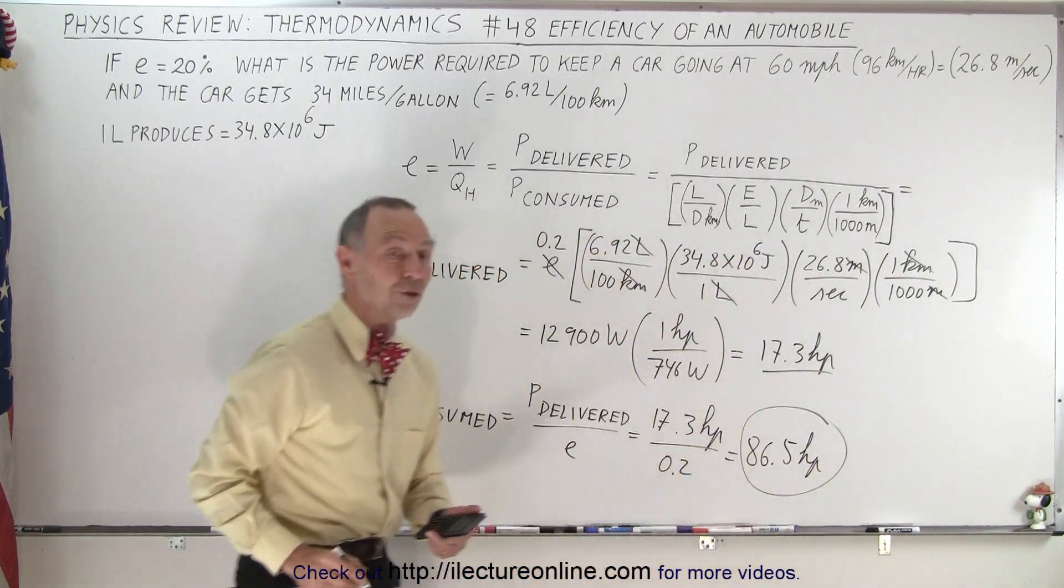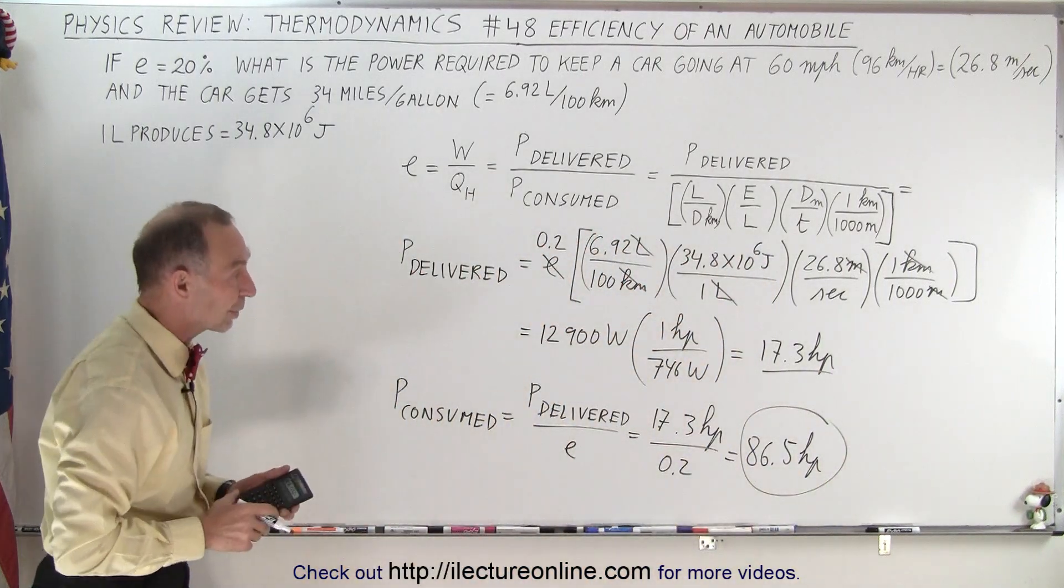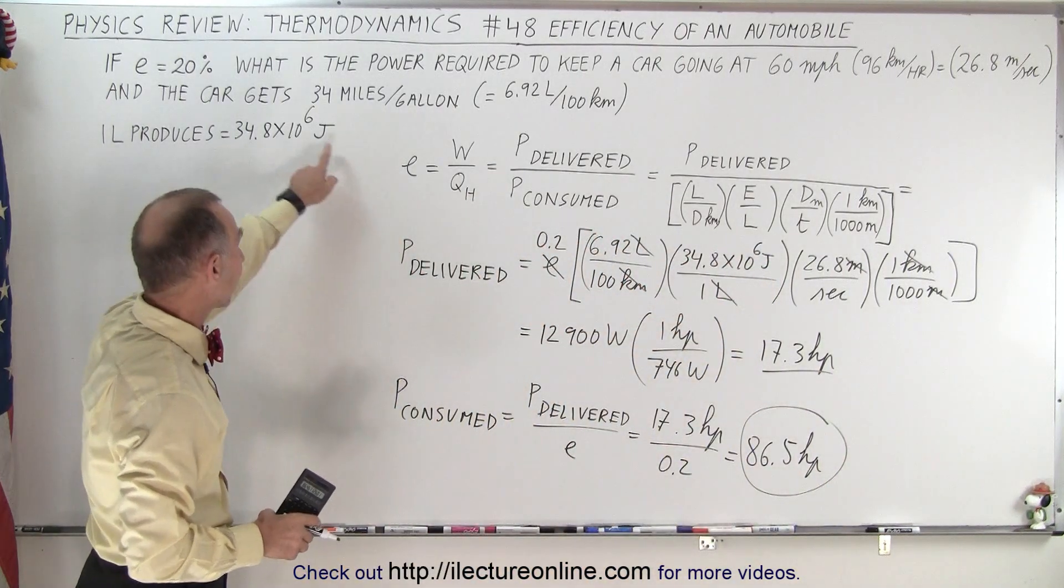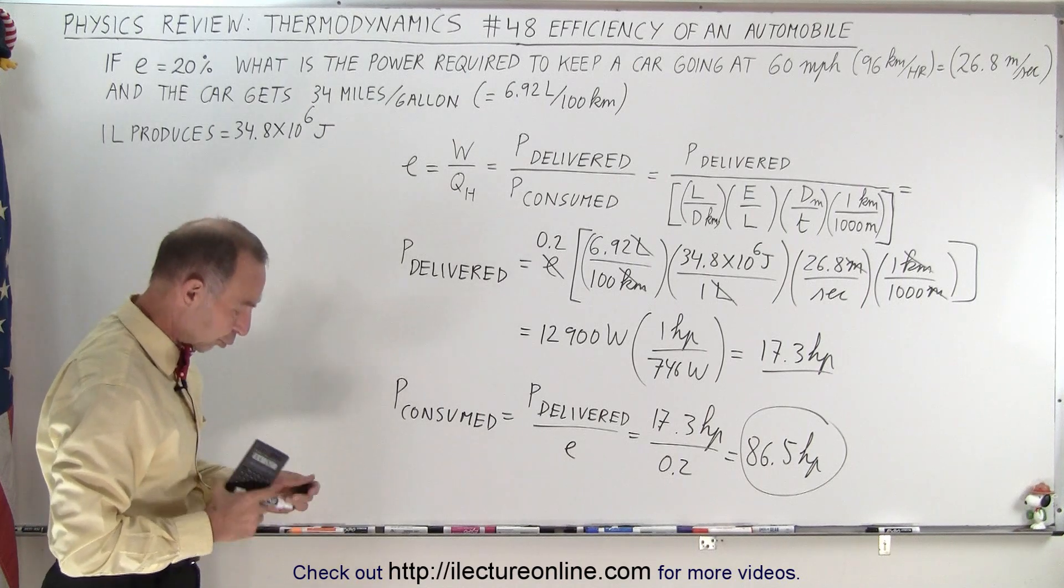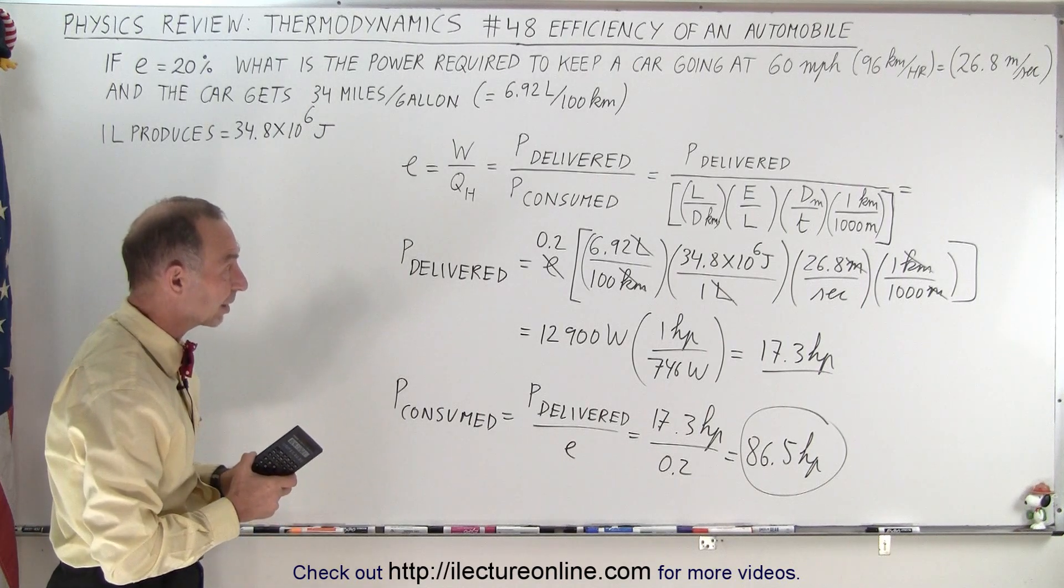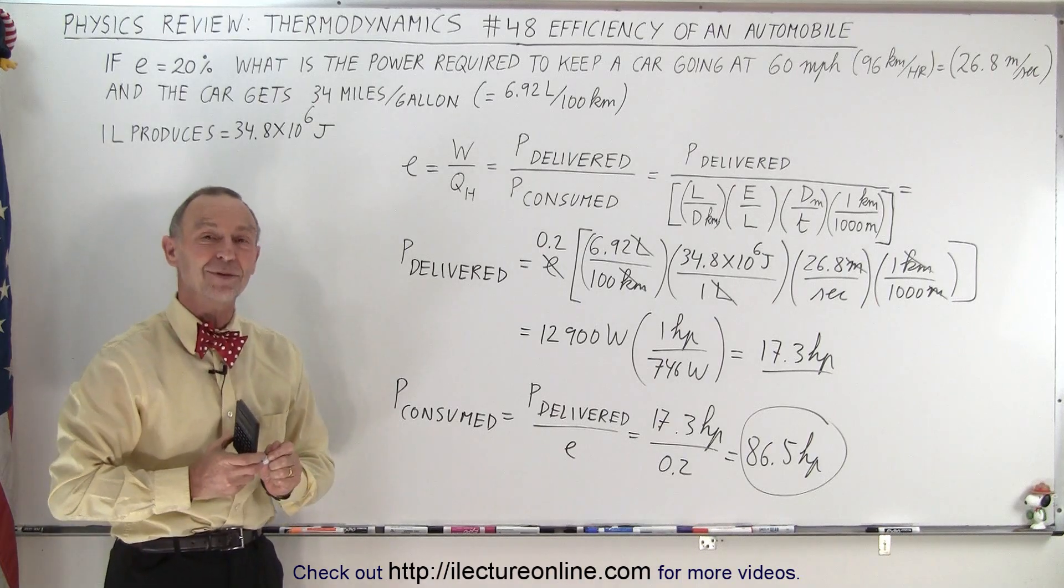So that's how much we have to consume in order to deliver 17.3 horsepower to the car. If the car has an efficiency of 20%, then it's kind of nice to see how that is calculated. That is how it's done.